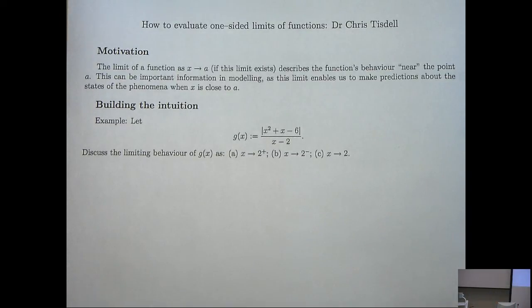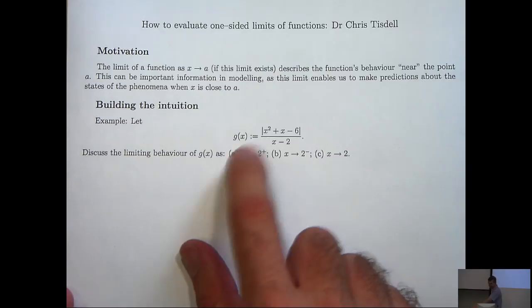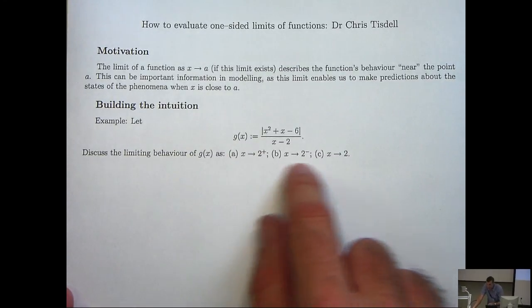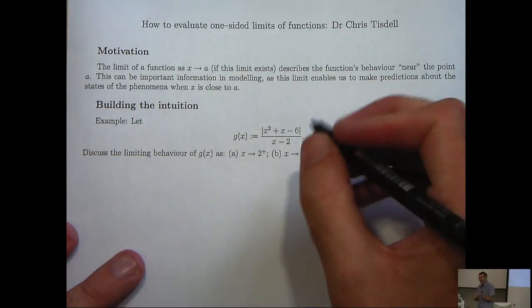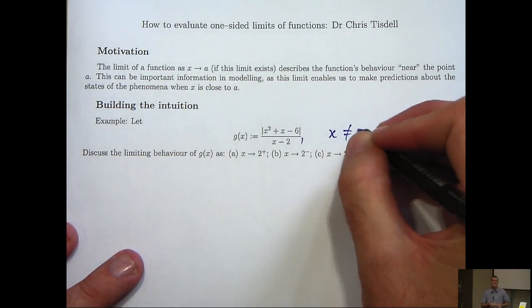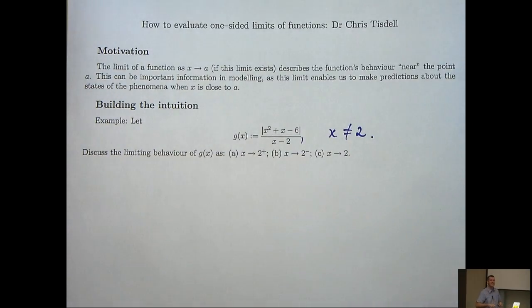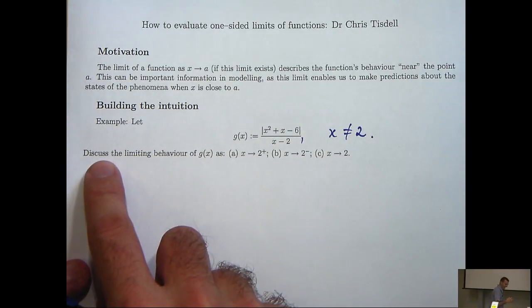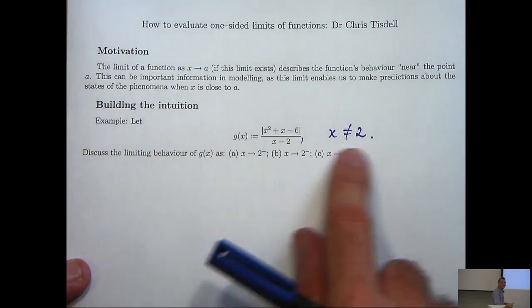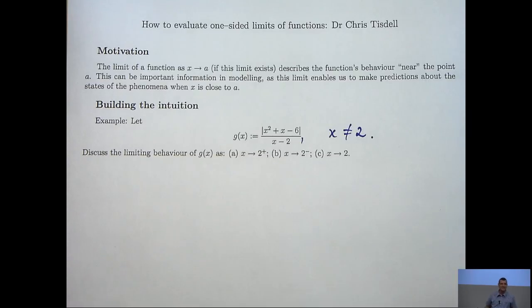Anyway, let's build our intuition a little bit and consider the following example. Here's our g(x), discuss the limiting behavior of g near 2. So the first thing we flag is that g of 2 is not defined. So essentially what this question is asking us is, how does g behave near this point, even though this point's not in the domain of g.